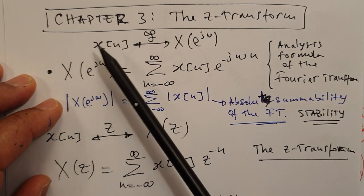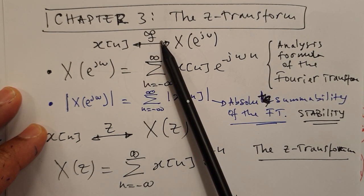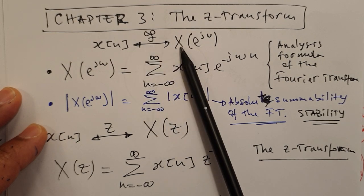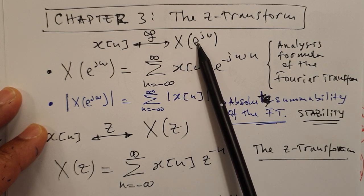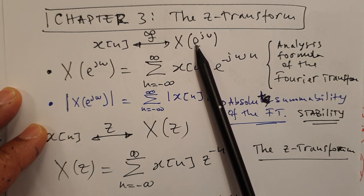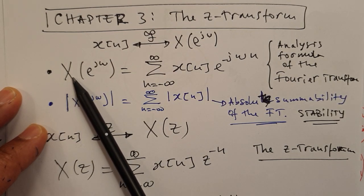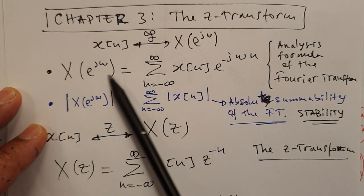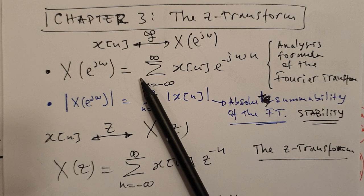So, if you remember, given a sequence x, we applied the Fourier transform to it in the previous video to get another sequence, which is a function of a complex exponential e to the j omega. The general formula that we used, which is known as the Fourier transform, is described by this equation here.